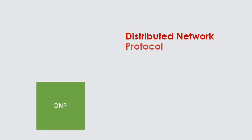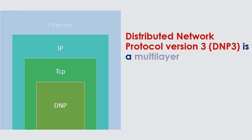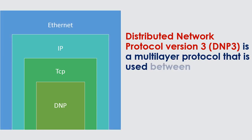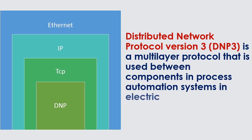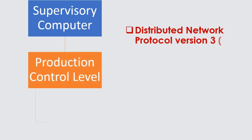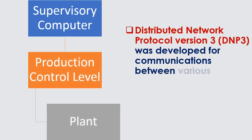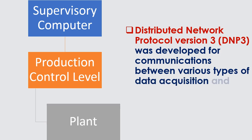Distributed Network Protocol Version 3, DNP3, is a multi-layer protocol used between components in process automation systems in electric and water companies. DNP3 was developed for communications between various types of data acquisition and control equipment.